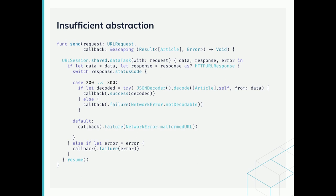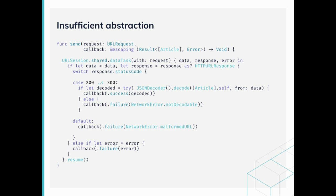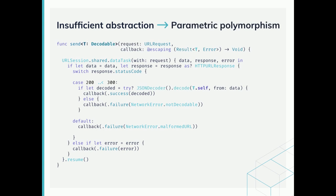We can start applying a set of refactorings in order to address the previously mentioned issues. For instance, we said that the send function can be generalized. In fact, we can make use of parametric polymorphism in order to abstract over the type that needs to be decoded. All this function needs to know about this type is that it conforms to the Decodable protocol and nothing else. With this small change, our send function can send any network request and decode its result into the provided type.